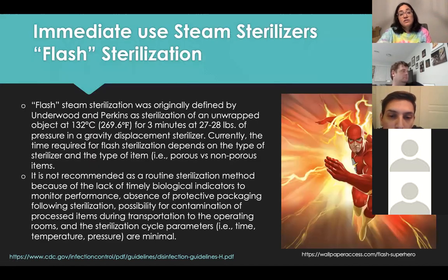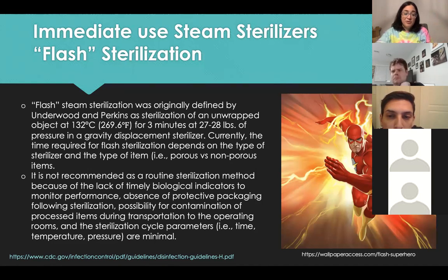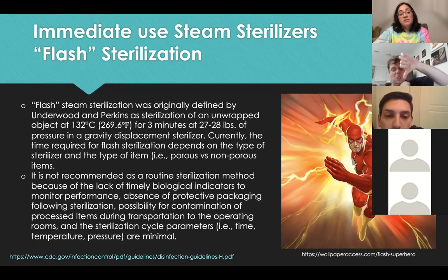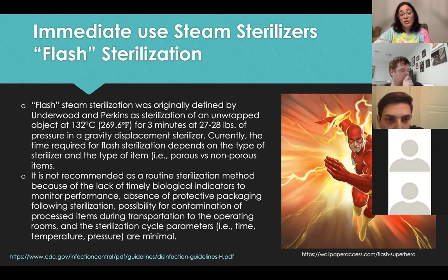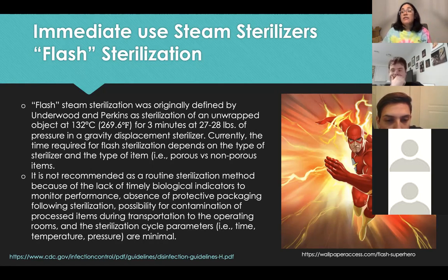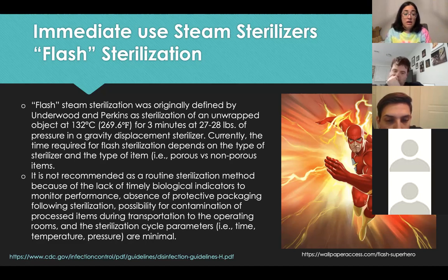IUSS — immediate use steam sterilization — was formerly called 'flash' sterilization, which is a somewhat outdated term. Flash steam sterilization was originally defined by Underwood and Perkins as sterilization of an unwrapped object at 269.6°F for three minutes at 27 to 28 pounds. IUSS is not recommended as a routine sterilization method. It should only be used in truly emergent situations — when it's a one-of-a-kind instrument, there is absolutely no other way to reprocess it, and it is urgently needed mid-procedure with no backup available.